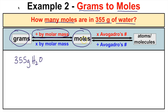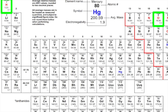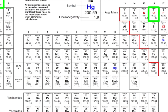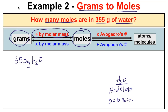We need to figure out the molar mass of water. H₂O is made up of hydrogen and oxygen — there are two atoms of hydrogen and one atom of oxygen in a water molecule. The molar mass of hydrogen from the periodic table is 1.01 and the molar mass of oxygen is 16.00. So we get 2.02 for hydrogen and 16.00 for oxygen, which adds up to 18.02 grams per mole — that is our molar mass of water.